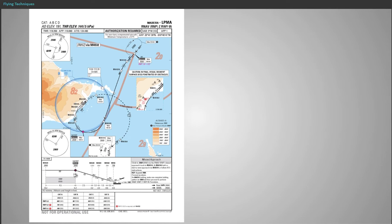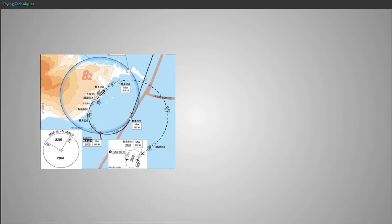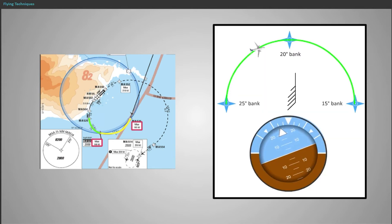The bank angle along an RF leg depends upon the radius of the RF leg, the aircraft ground speed, and the drift angle. A local or statistical wind model is taken into account during procedure design. Consequently, a speed constraint is often assigned at the entry point of a tight radius-to-fix leg in descent. This speed limit allows the autopilot to guide the aircraft along the RF leg with LDEV centred, with the maximum autopilot permitted bank angle in NAV mode — for example, 30 degrees in the case of very strong winds. Note: in climb, the speed constraint is assigned at the exit point of the RF leg.